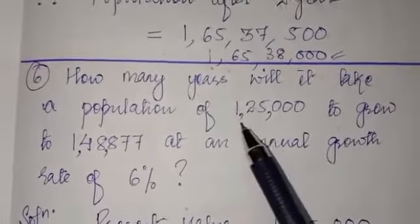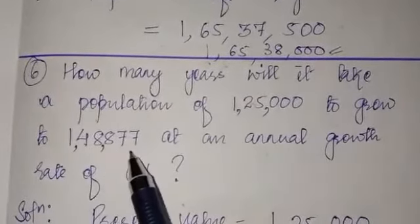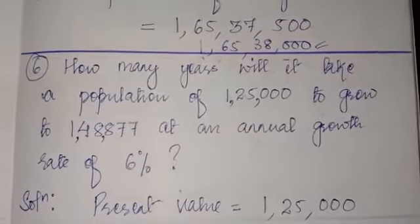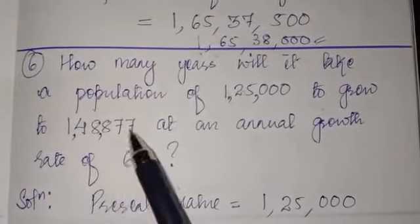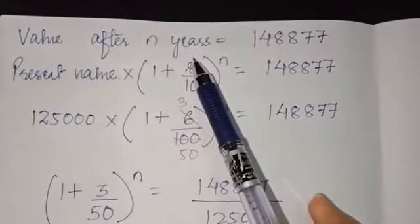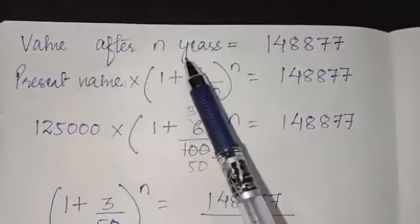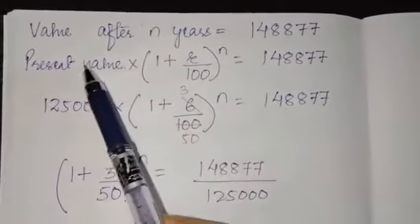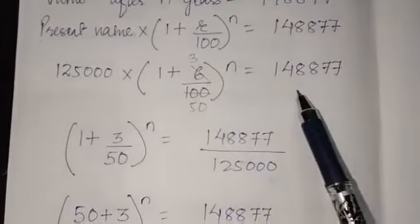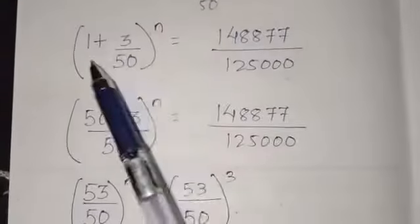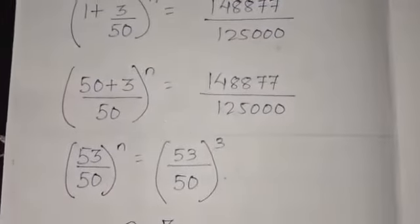Question number six: How many years will it take a population of 1 lakh 25 thousand to grow to 1 lakh 48 thousand 877 at an annual growth rate of six percent? Present population is 1 lakh 25 thousand, and we need to find after how many years it reaches 1 lakh 48 thousand 877. Rate of appreciation is six percent, time n is unknown. Using the appreciation formula, present value into 1 plus r by 100 to the power n: divide the right-hand side by 1 lakh 25 thousand, put r as 6, cancel with 2, take LCM to get 53 by 50.